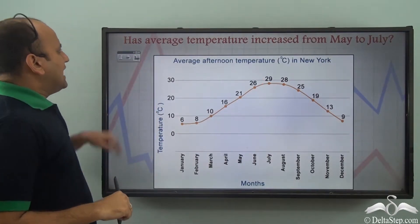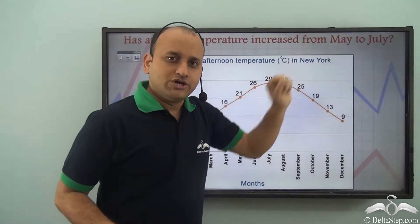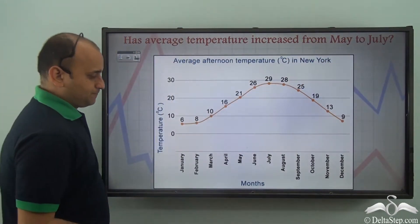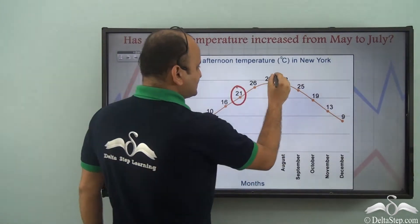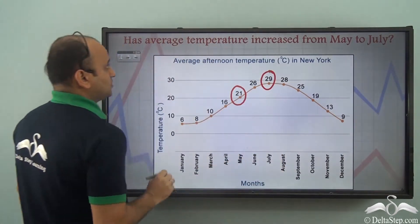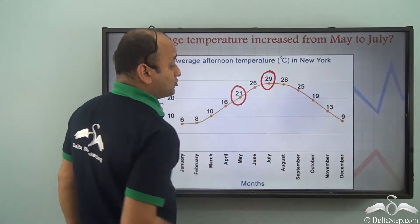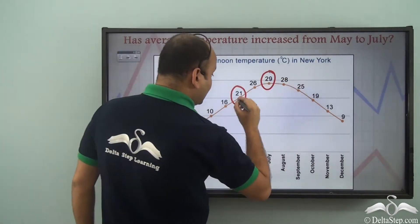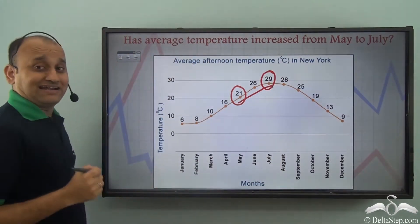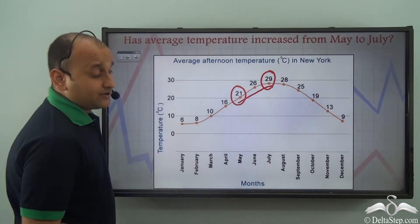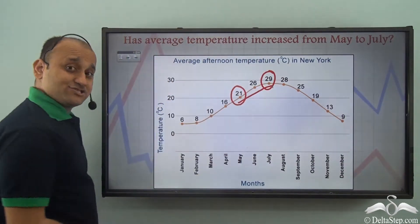Has average temperature increased from May to July? This is the data for May and this is the data for July. If you look from May to July, you have an increasing or upward trend. So definitely, temperature has increased from May to July.